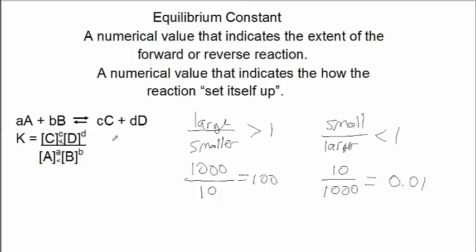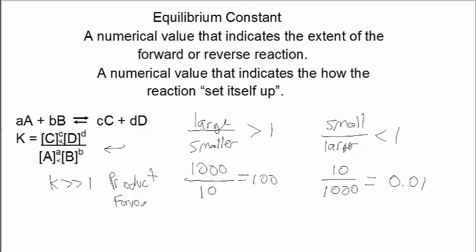Take a look at the equilibrium constant expression here. It is a fraction with numbers in the numerator and the denominator. So if the numerator is large — larger than the denominator — in this case we would have K much greater than 1. This is indicative of a more product-favored reaction, because the concentrations of the products are larger than the concentrations of the reactants.